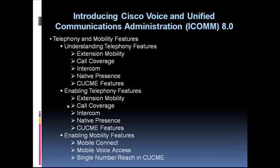Besides extension mobility, there's also Cisco Unified Mobility, which consists of two features: Mobile Connect and Mobile Voice Access. These allow you to have one number on your business card that simultaneously rings your office phone, cell phone, and home phone — up to 10 phones at once. You can also call a customer from your cell phone using Mobile Voice Access: you call a special number at headquarters, provide the customer's number, and the router calls on your behalf so the caller ID shows your office number.